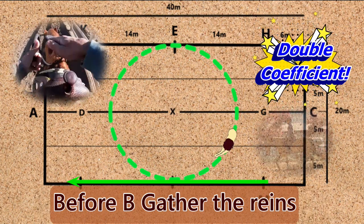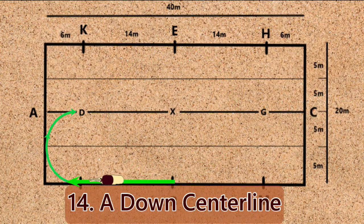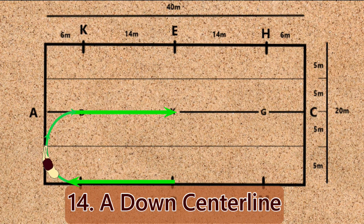Movement 14: Before B, gather the reins, working jog. A, down center line.